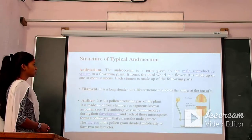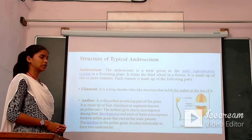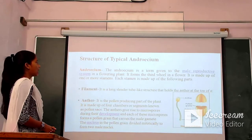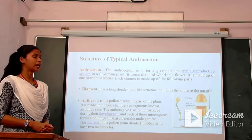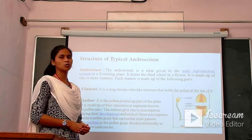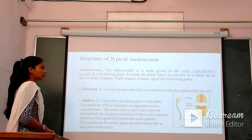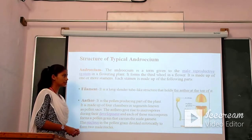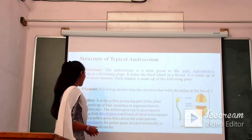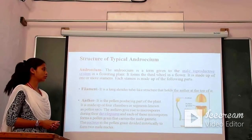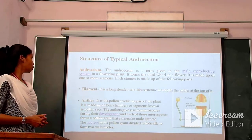Let's begin with the structure of typical androecium. Androecium is the male reproductive organ in a flowering plant and it forms the third whorl in a flower. It is made up of one or more stamens, and each stamen consists of two parts: anther and filament. The filament is a thread-like, long slender tube that holds the anther at its top. The anther is the pollen-producing part of the plant and is made up of four chambers or segments known as pollen sacs.